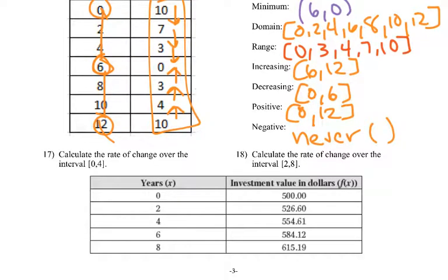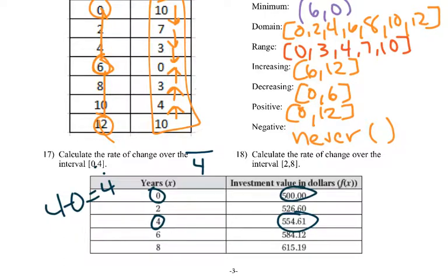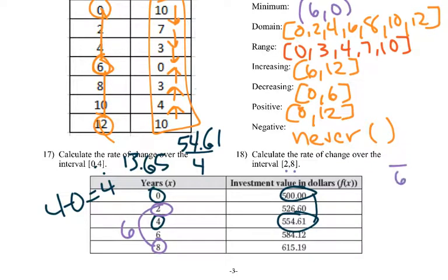Two more problems using the same table for rate of change. For 0 to 4: 4 minus 0 is 4, and 554.61 minus 500 is 54.61. So 54.61 divided by 4 gives about 13.65. Then for 2 to 8: 8 minus 2 gives 6, and 615.19 minus 526.60 is 88.59. Divide by 6, and we get a rate of change of 14.77.